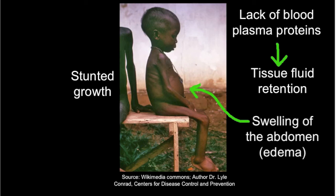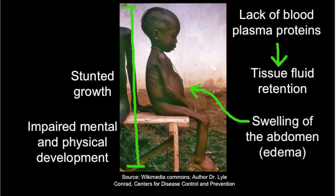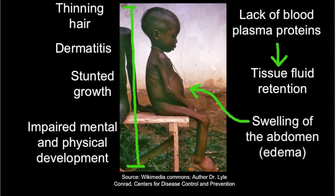If it's a child who's suffering, stunted growth may occur and there may also be an impairment of their mental and physical development. In addition, thinning hair may also be evident and the person might show symptoms of dermatitis on their skin.